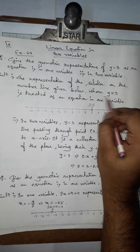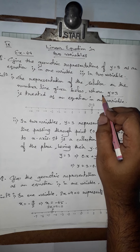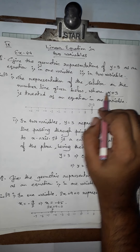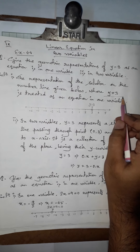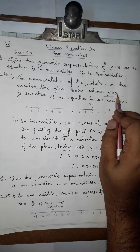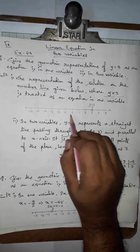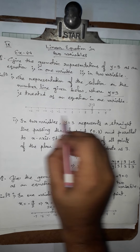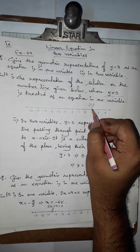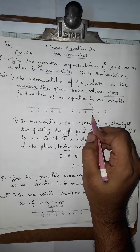The given equation is y equals 3. That means here only one variable is present — y. x is not given, so the coefficient of x is 0 here. But we don't need that now because it is asked to represent in one variable. So y equals 3 means the only solution is y equals 3, and it will represent as a point on the number line only.